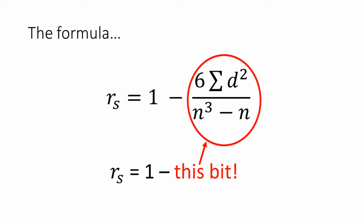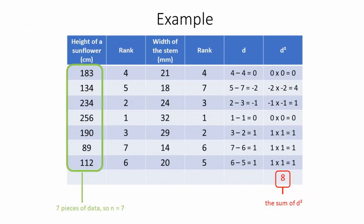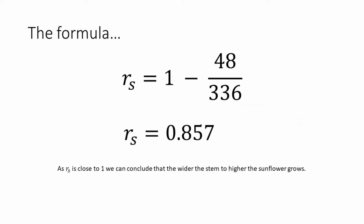This is where we start using the formula for Spearman's rank. The formula is: RS equals 1 minus 6 times the sum of d squared, over n cubed minus n. We had seven pieces of data, so n equals 7. The sum of d squared equals 8. When we plug all of these into the formula, we get 1 minus (6 times 8) over (7 cubed minus 7), which works out as 48 over 336, giving us a Spearman's rank of 0.857. Generally speaking, the closer we are to 1, the stronger the correlation is going to be — though that isn't always necessarily the case, as we'll look at later.